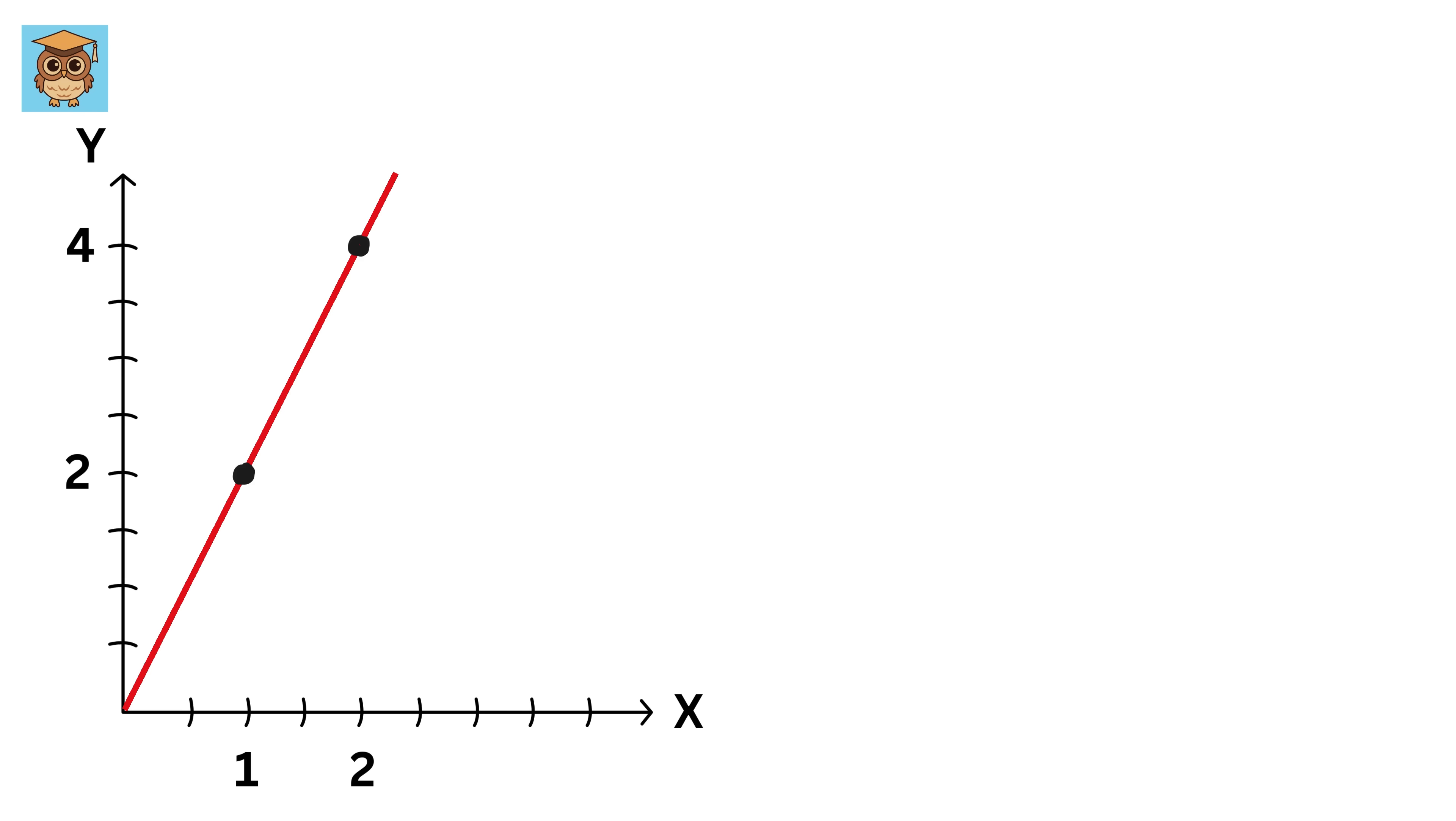Now consider another line, y equals 2 times x. The slope of this line is 2, meaning that for every one step forward in x, y now goes up by 2. In other words, this line is much steeper than the first one. Therefore, slope is like a measure of the line's steepness. It tells us how fast y is changing compared to x.